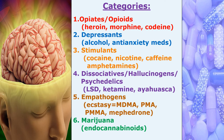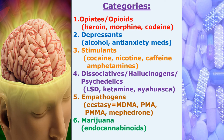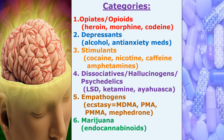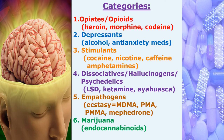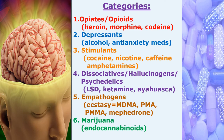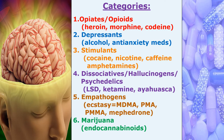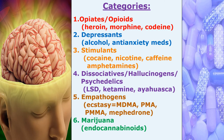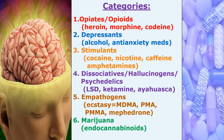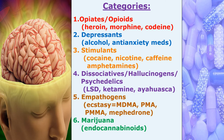Second, depressants — drugs that slow down the body, like alcohol or anti-anxiety medicines. Third, stimulants that speed up the body, like cocaine, caffeine, nicotine, or amphetamines. Fourth, the dissociatives or hallucinogens like LSD and other drugs that give a sense of altered perception. Fifth, the empathogens like ecstasy, whose main ingredient is MDMA or mephedrone. And finally, the cannabinoids like marijuana, which activate chemicals in your brain called endocannabinoids.